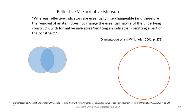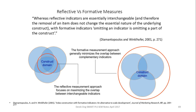As Diamantopoulos and Winkhofer said, reflective indicators are essentially interchangeable, and therefore the removal of an item doesn't change the essential nature of the underlying construct. However, with formative indicators, omitting an indicator means omitting a part of the construct within the latent variable. The reflective measure approach focuses on maximizing the overlap of the interchangeable indicators, whereas the formative measure approach minimizes the overlap in the complementary indicators — think of it like a regression model.